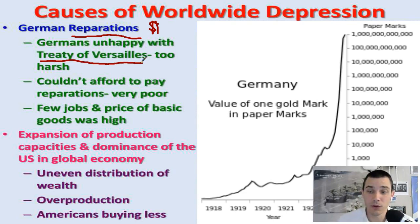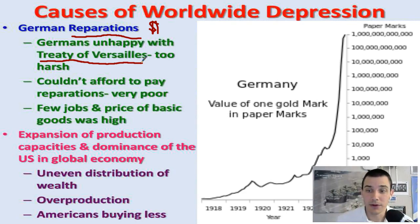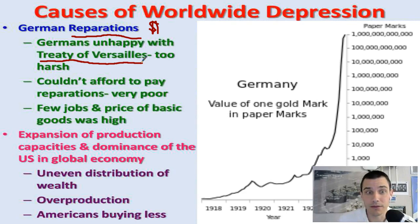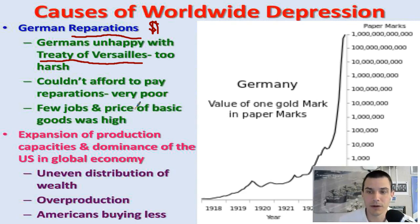The country as a whole was struggling to pay back these reparations. It was hurting everyday people, increasing taxes and the burden on them. Many people didn't like it. And then this depression hits and things get even worse — people have fewer jobs, the price of basic goods was extremely high. We'll go over this more in the next video, specifically how this depression is one of the factors that leads to the rise of Hitler.